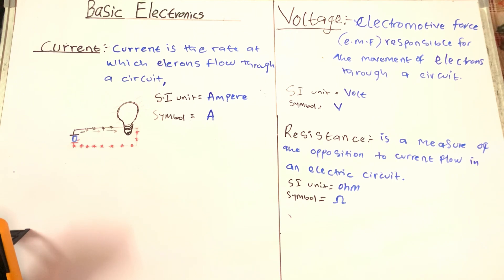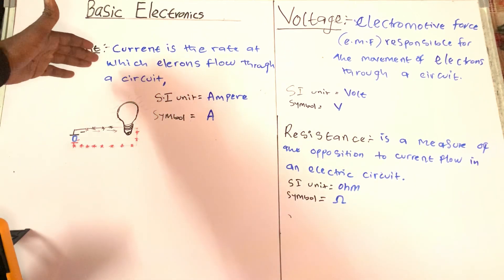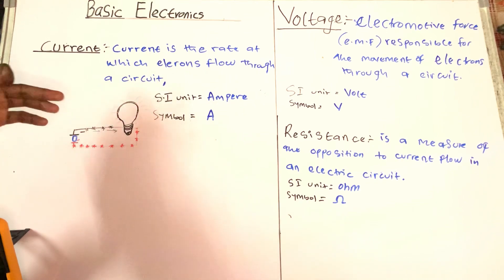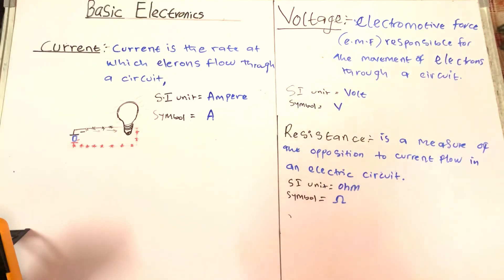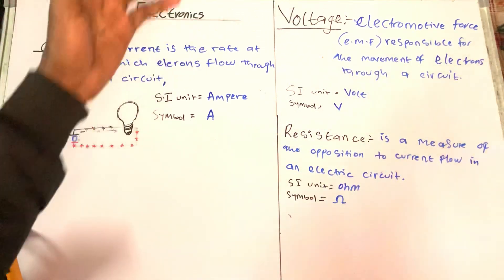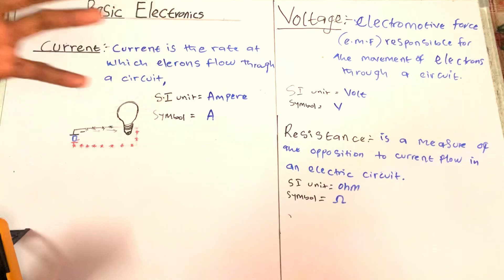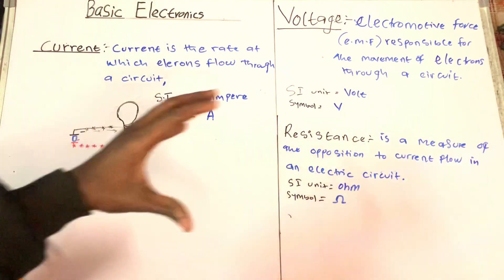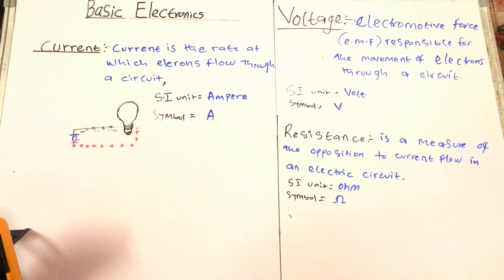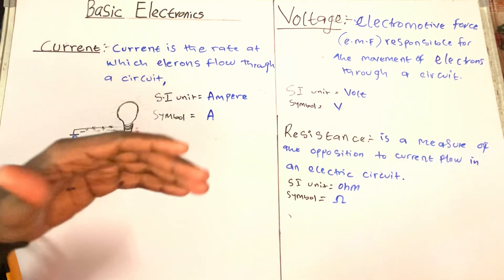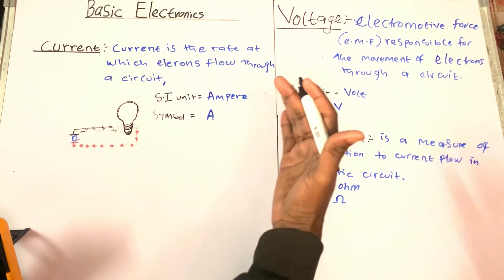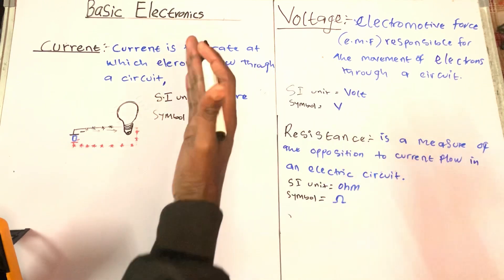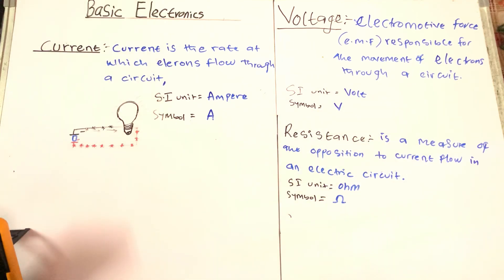Now resistance is a measure of the opposition to current flow in an electric circuit. You see, current are these charges that move in a conductor, that move in an electric circuit, while voltage is the force that makes those electric charges move faster and faster. And then resistance now is like a force that is opposing these electrons from moving.